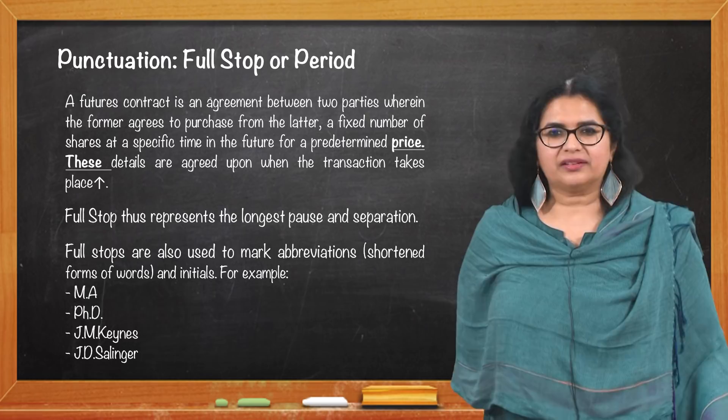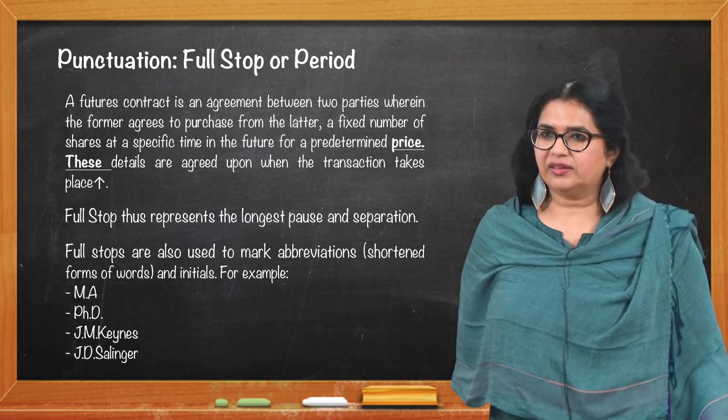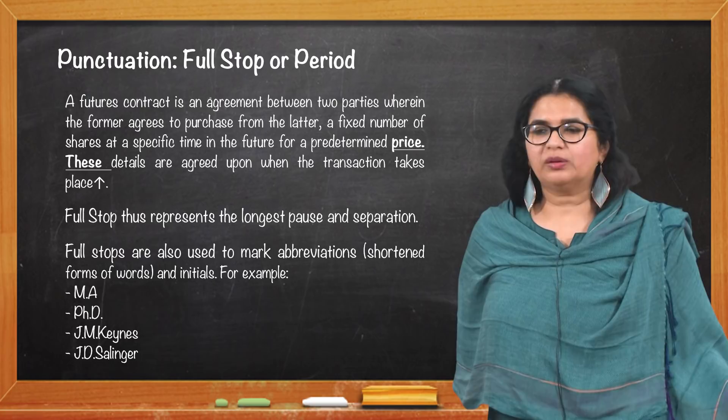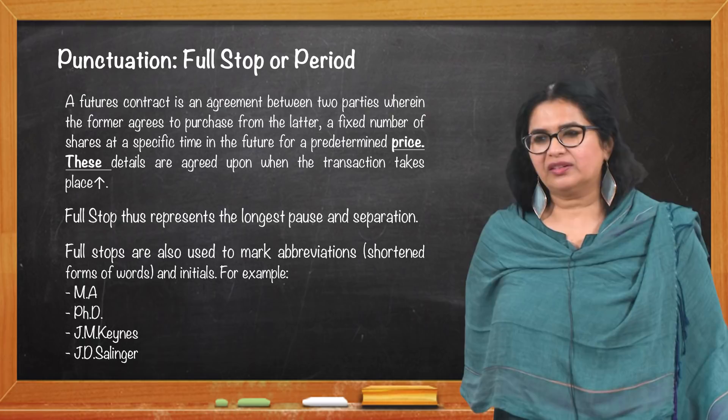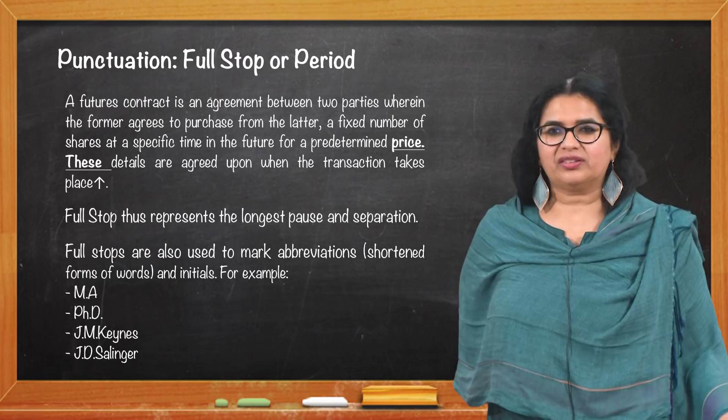Full stops are also used to mark abbreviations — PhD, MA, MBBS, and people's names like T.K. or R.K. Sometimes people decide to do away with full stops for marking abbreviations, which is also acceptable as long as you are consistent.